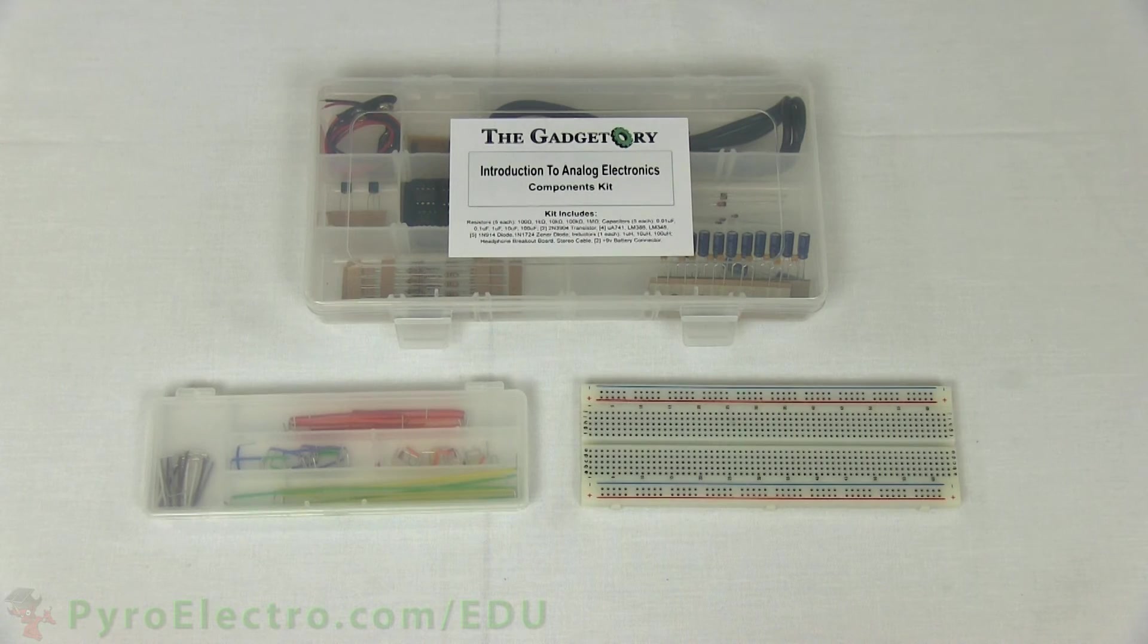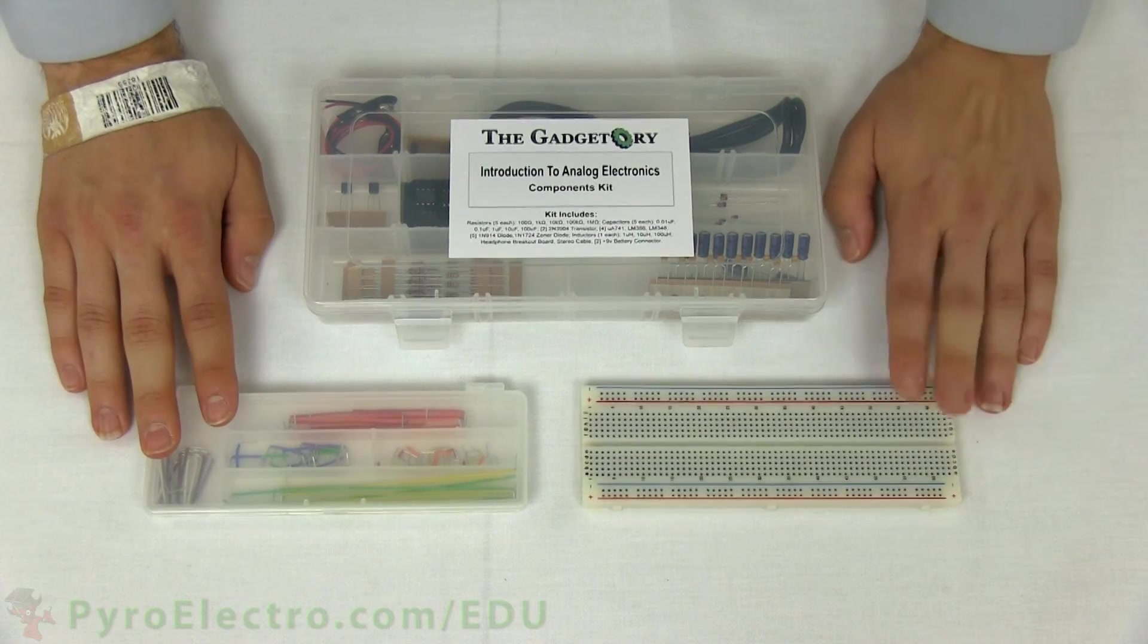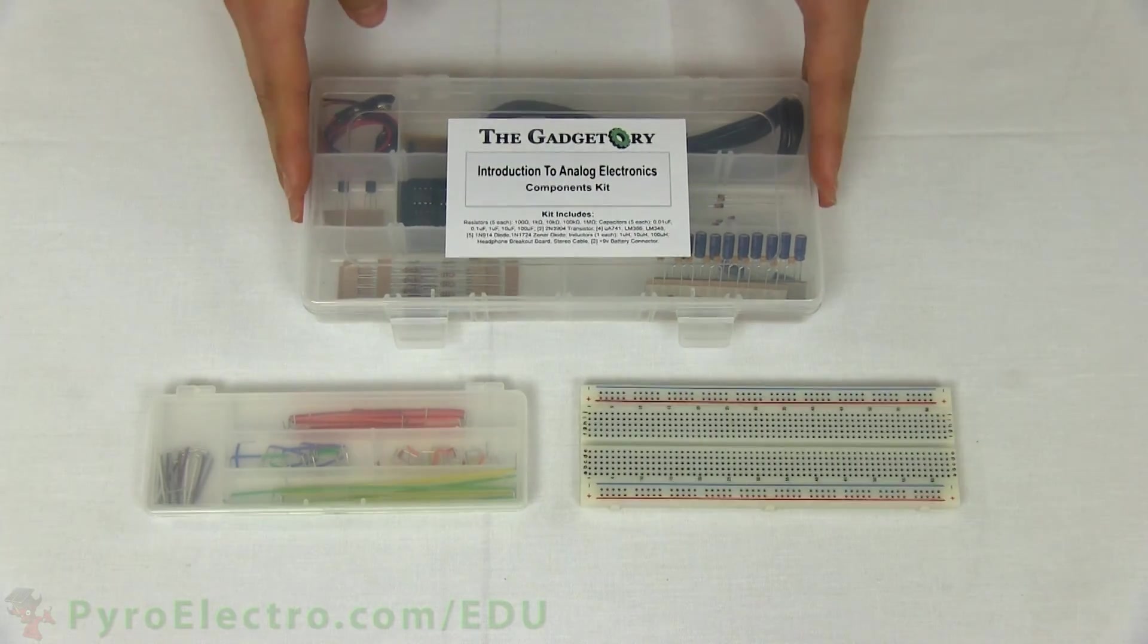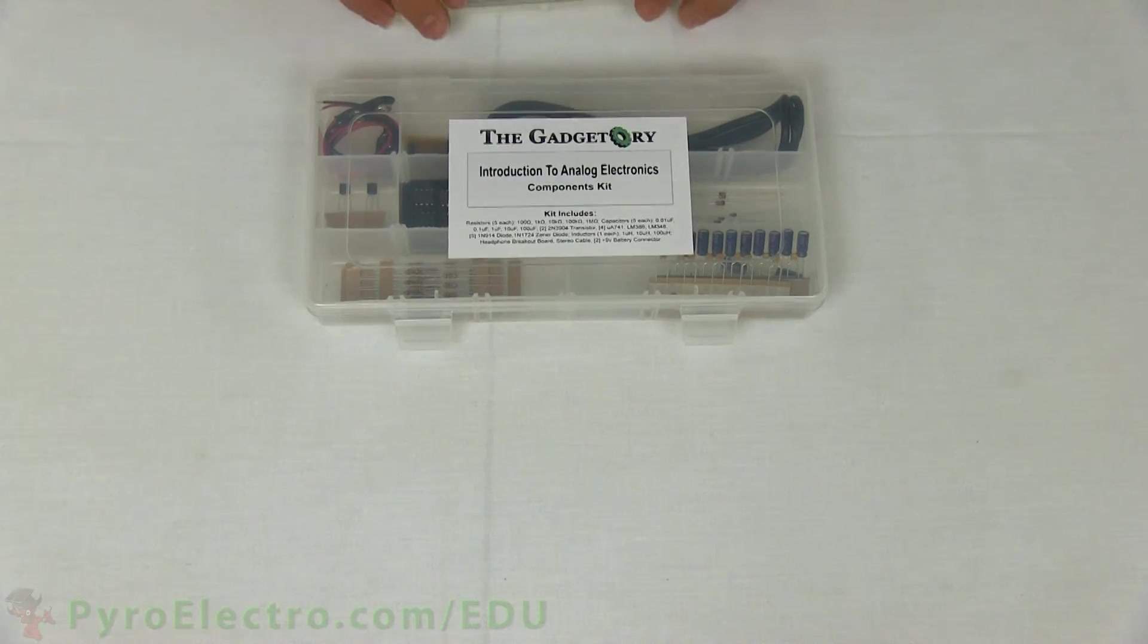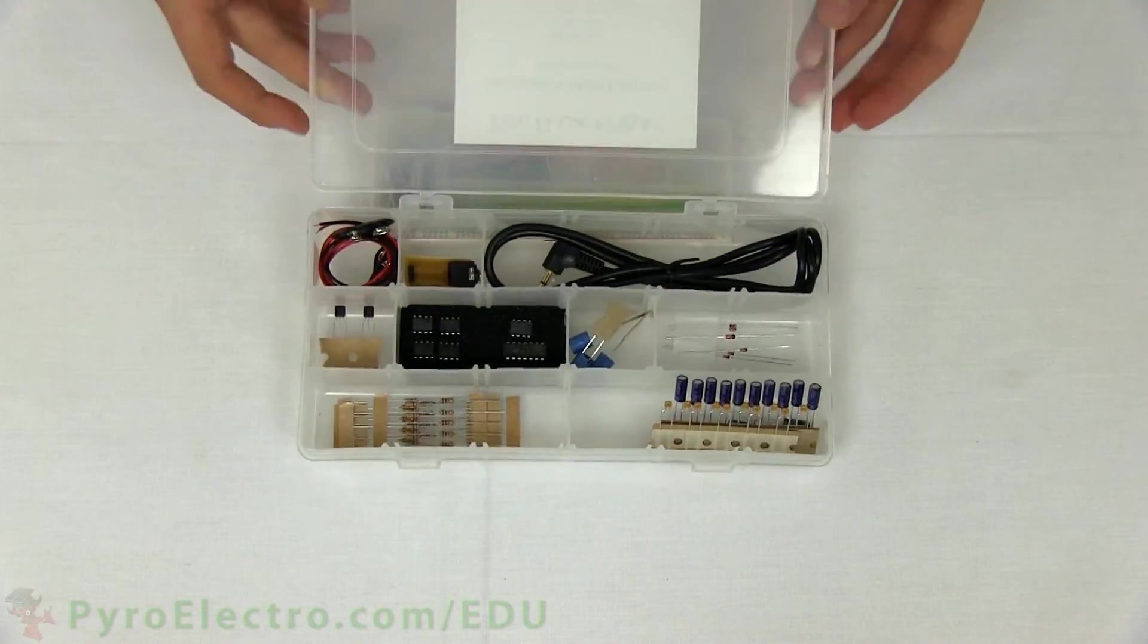In order to go along with this introduction to analog electronics course, you will need some hardware parts. The main parts are a breadboard jumper wire kit and the analog electronics components kit. Let's take a moment and get a closer look at the components kit so that we can put a name to all of the different parts that we'll be using.